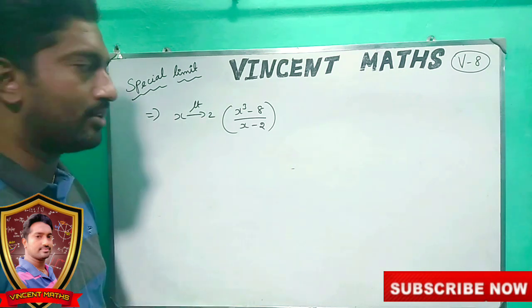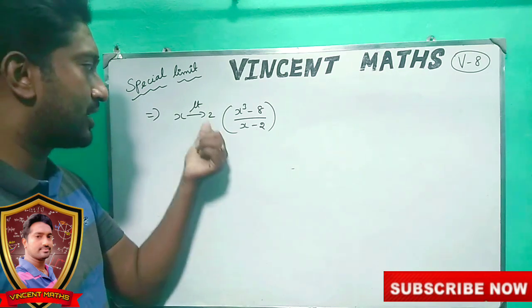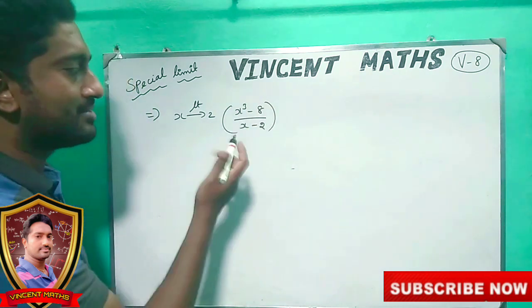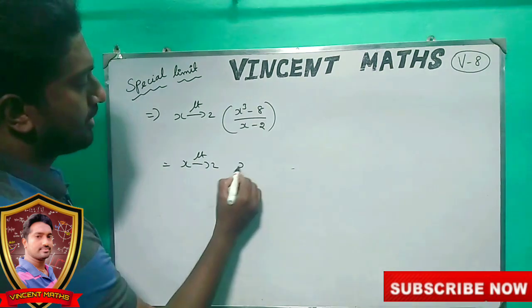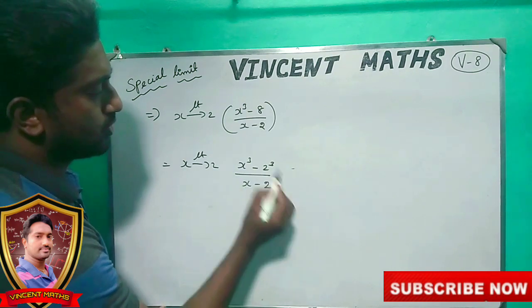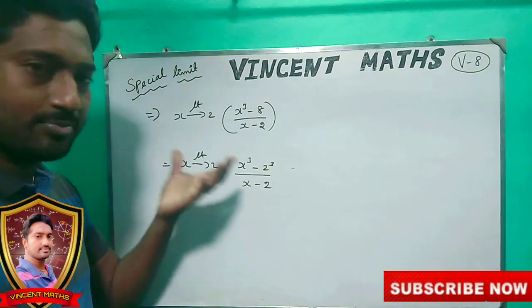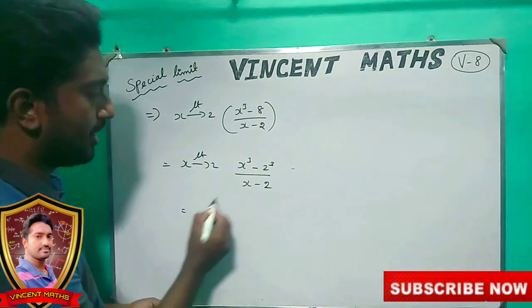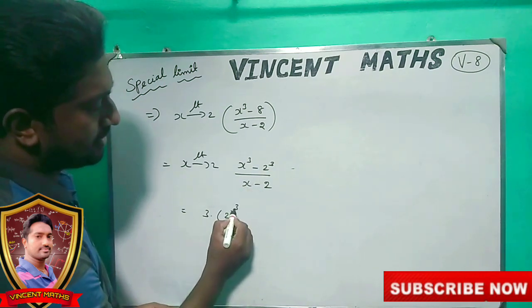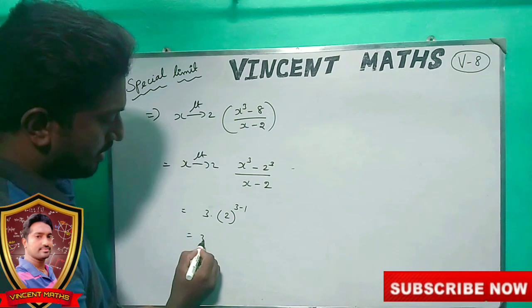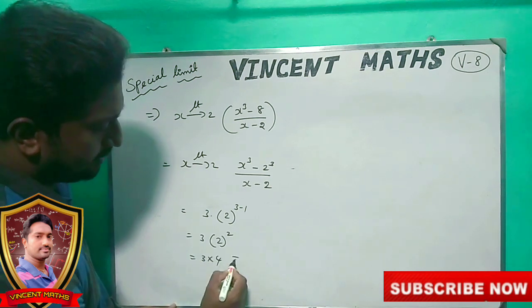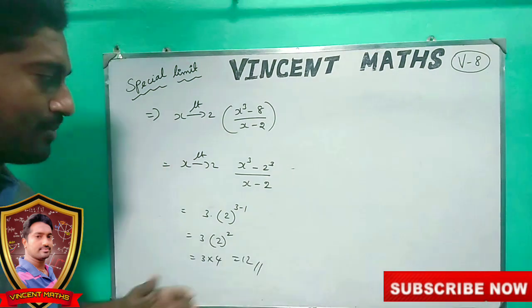x goes to 2. x minus 2. In the numerator we have 2. Limit x goes to 2: x power 3 minus 2 power 3 — which is 8 — divided by x minus 2. We have all the formula. The n value is 3, a value is 2: 3 into a power n minus 1 — that is 3 minus 1, which is 2 squared, giving 4. So 3 into 4 equals 12.